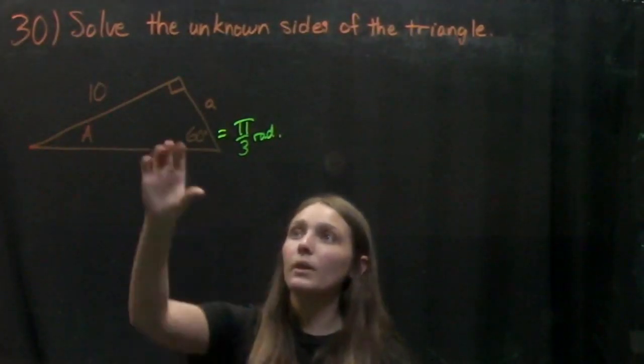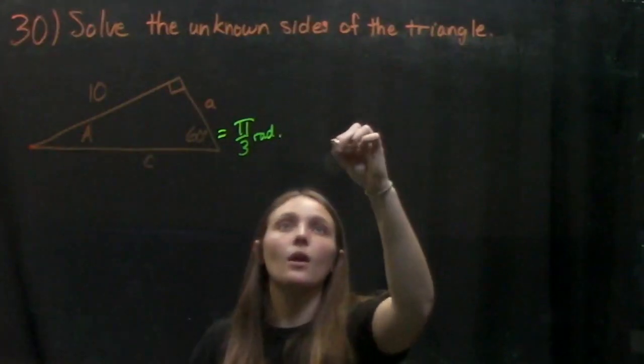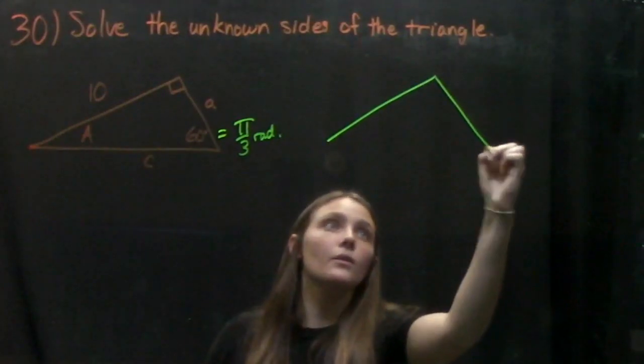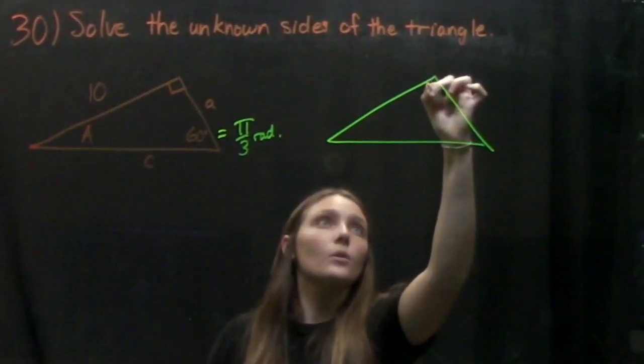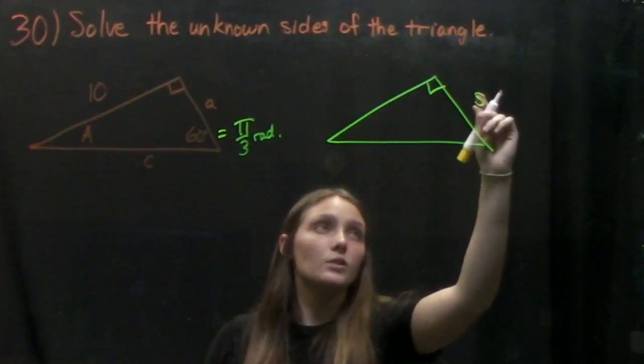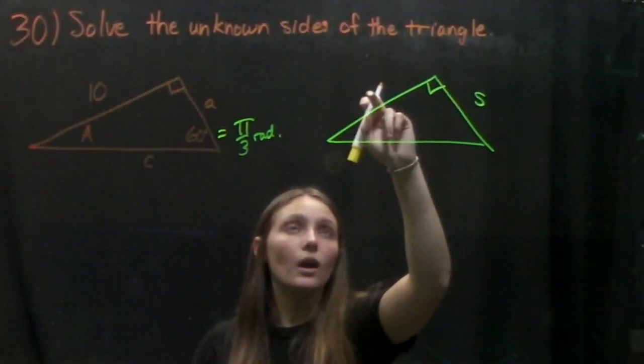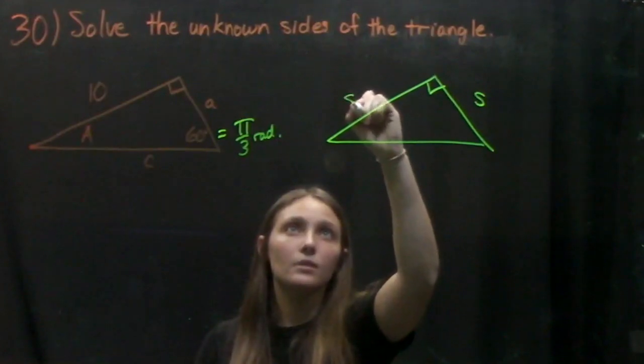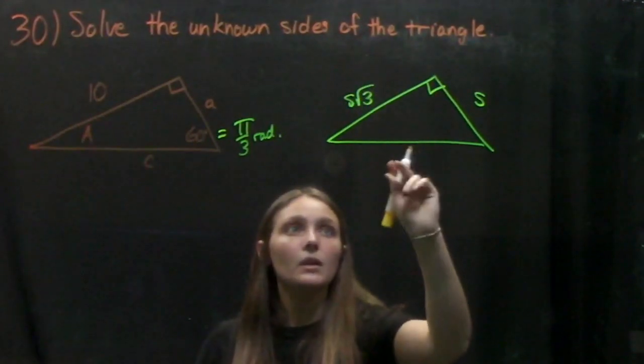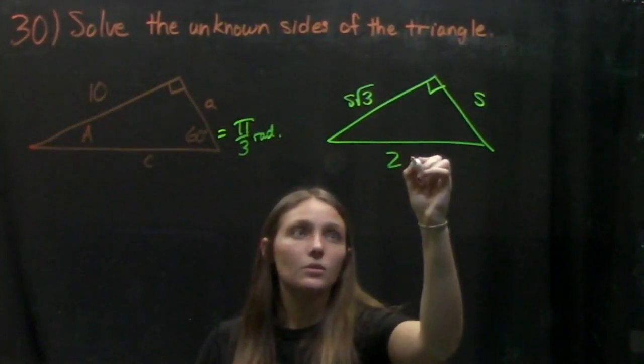We can recognize that this is just like our 30, 60, 90 degree triangle, which says that if our smallest side is S, our other side that is not the hypotenuse is S root 3, and our hypotenuse is going to be 2S.